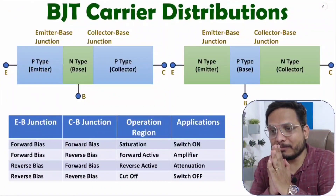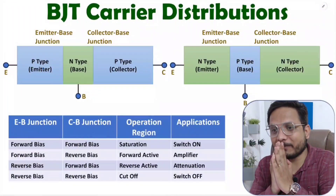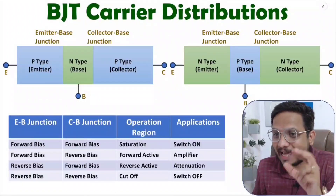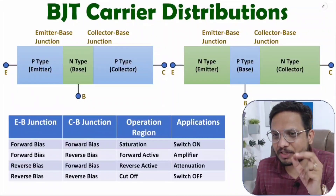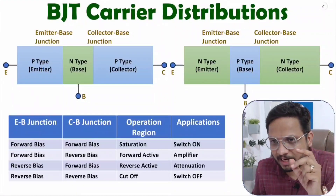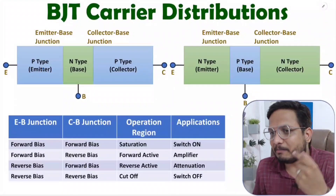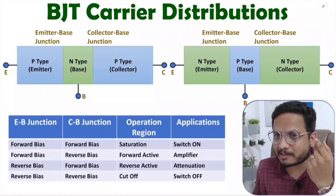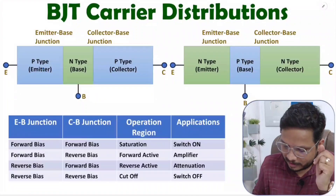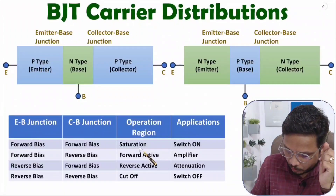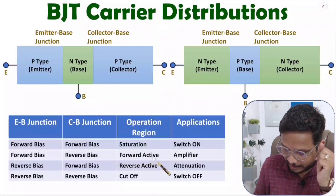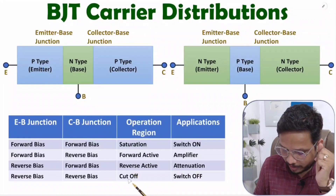Hello friends, welcome to Engineering Funda family. In this video I am going to explain BJT carrier distributions in different operational regions of BJT. In my last video I already discussed the varieties of operational regions of BJT. There are total four operational regions: saturation, forward active, reverse active, and cutoff.